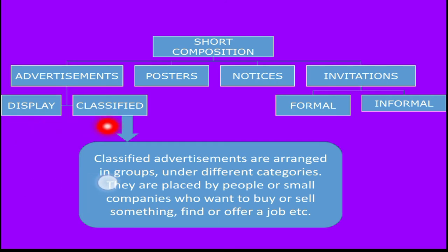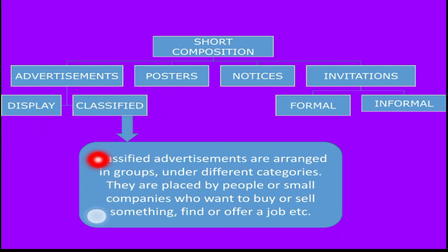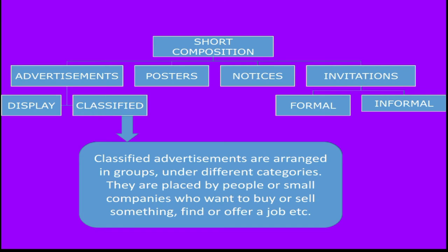Here we are taking the first one, that is advertisement. Advertisements are further divided into display and classified. For class 11th and 12th, only classified advertisements are in your syllabus. Display advertisements are those which you watch on television or in print media — those are not in the syllabus. Classified advertisements are arranged in groups under different categories such as property, to let, for sale, situation vacant, situation wanted, tours and travels. They are placed by people or small companies who want to buy or sell something, find or offer a job, etc.